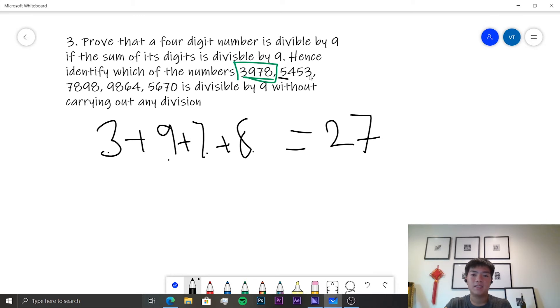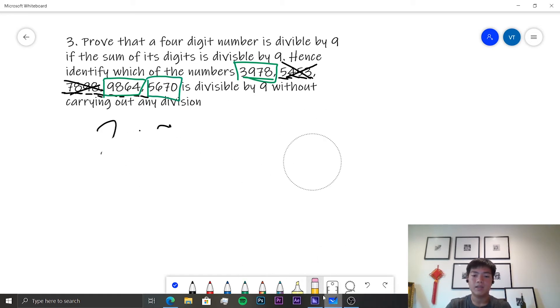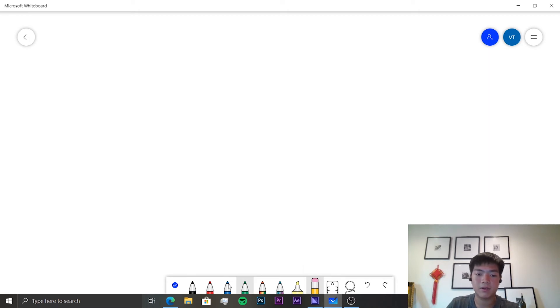5453, does this add up to 9? 10, 17, no, so not that. 7898, no, because this is 15 plus 8, 23 plus 9 is 32, so that's not clearly. 9864, it is, because this is equal to 27. And 5670 is also, because that equals 18 if you sum it up. So that was it. This is a pretty quick one.